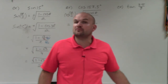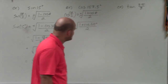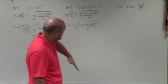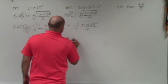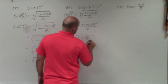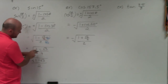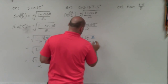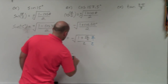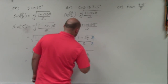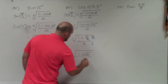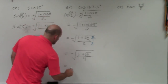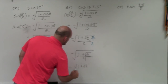So we have negative square root of 1 plus cosine of 315 degrees, divided by 2. Cosine of 315 degrees — that's 45 degrees south of 360 degrees — equals the square root of 2 over 2. So it equals negative square root of 1 plus the square root of 2 over 2, divided by 2. Multiplying by 2 over 2 to clear the fraction, we get 2 plus the square root of 2, divided by 4. The final answer is negative square root of 1 plus the square root of 2, all over 2.